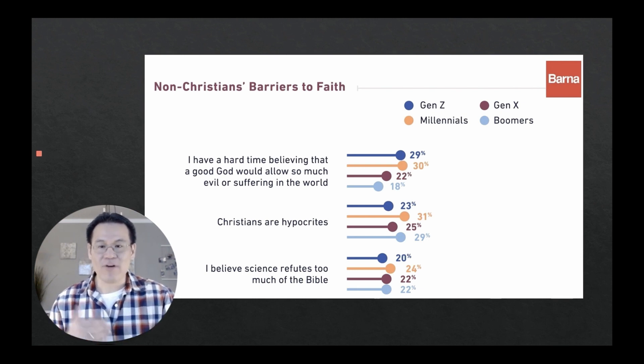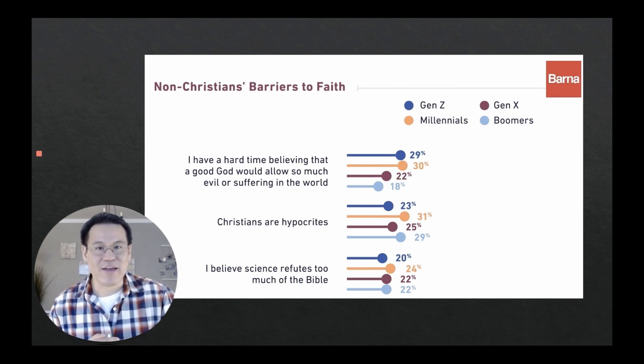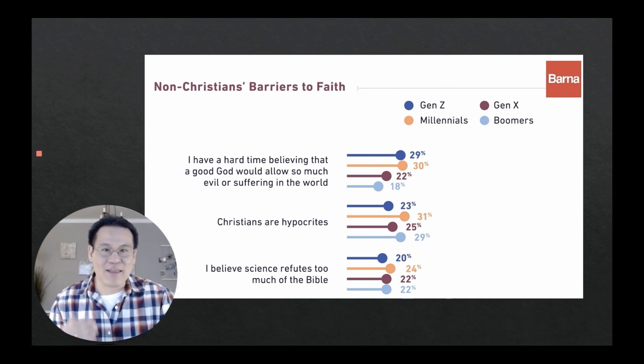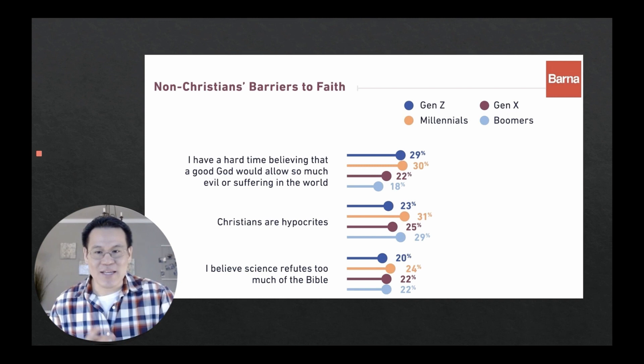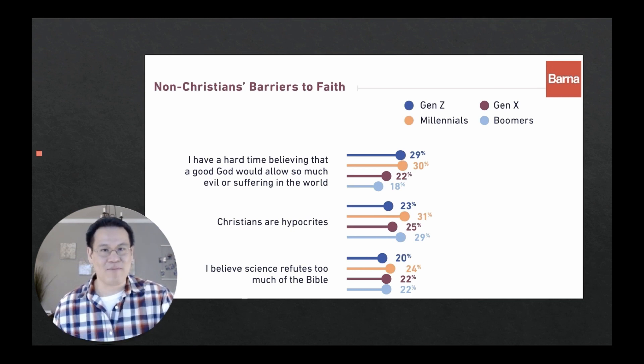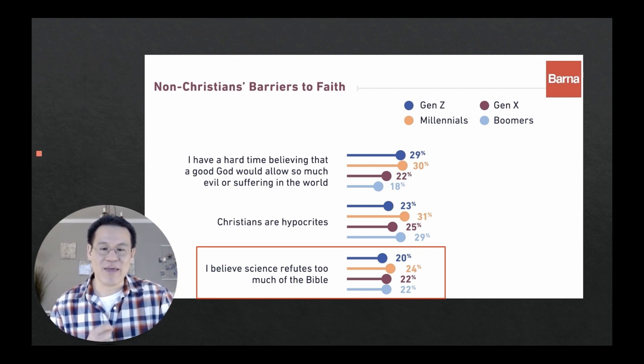With Generation Z compared to prior generations, the percentage of atheism has gone up from 7% to 13%. And those who identify themselves as Christians or Catholic, that has gone down. And why? So they went ahead and asked them, what are your barriers to faith? My first excuse being, I have a hard time believing that a good God would allow so much evil or suffering. The second reason is because Christians are hypocrites. And that's such a sad reason for a barrier. But then the third one, I believe science refutes too much of the Bible. And I think this one is something that we can do something about. And if we're going to reach our generation, we have to raise the plausibility structure for God and open the door for the possibility of them believing in him.